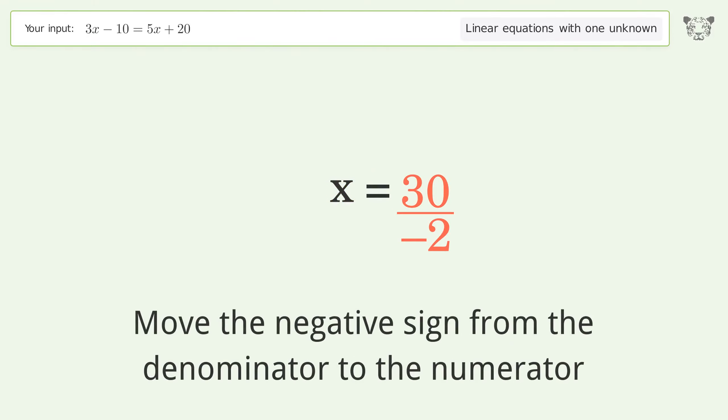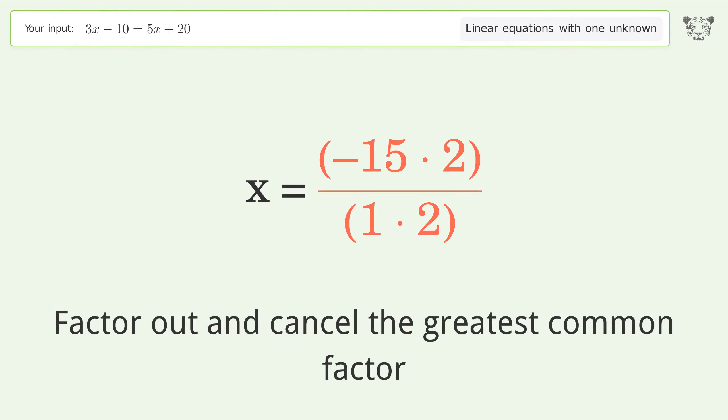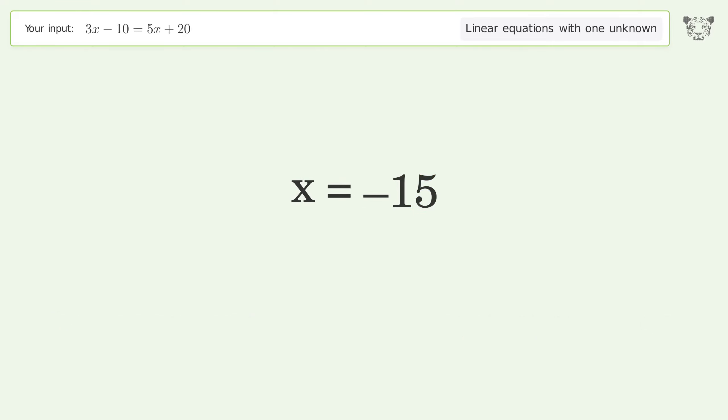Move the negative sign from the denominator to the numerator. Find the greatest common factor of the numerator and denominator. Factor out and cancel the greatest common factor. And so the final result is x equals negative 15.